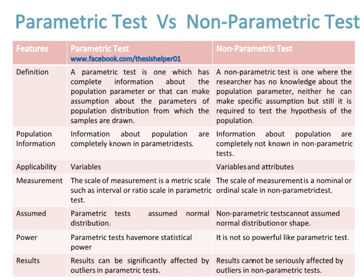Information about the population is completely known in parametric tests, while information about the population is completely not known in non-parametric tests. Variables only are used in parametric tests, while both variables and attributes are used in non-parametric tests. The scale of measurement is a metric scale such as interval or ratio scale in parametric tests, while the scale of measurement is a nominal or ordinal scale in non-parametric tests.